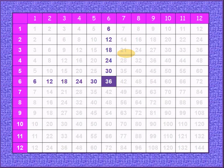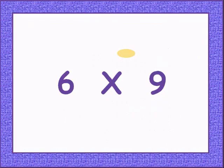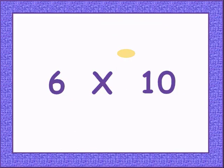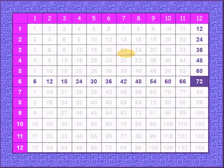6 times 7 is 42. 6 times 8 is 48. 6 times 9 is 54. 6 times 10 is 60. 6 times 11 is 66. 6 times 12 gives 72.